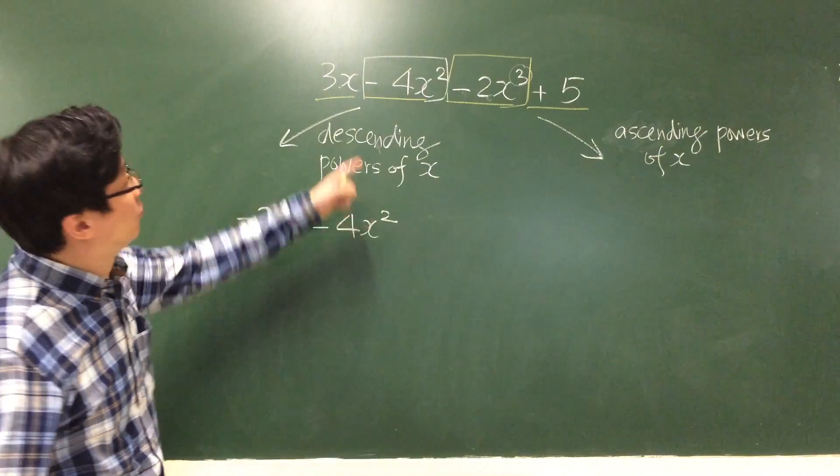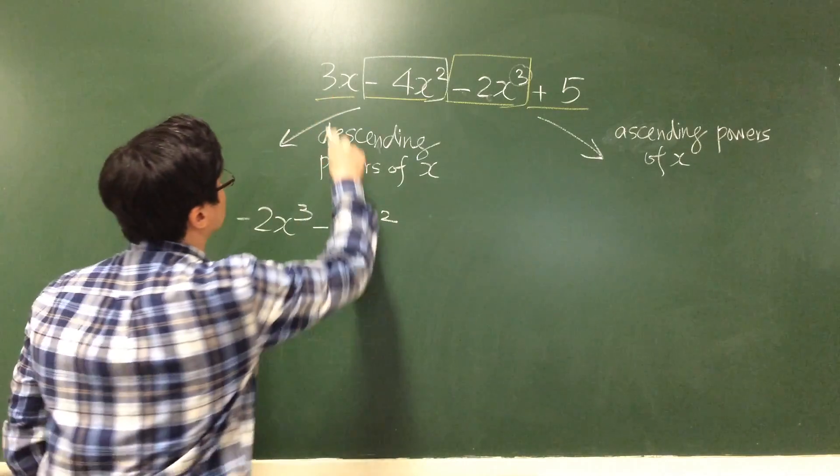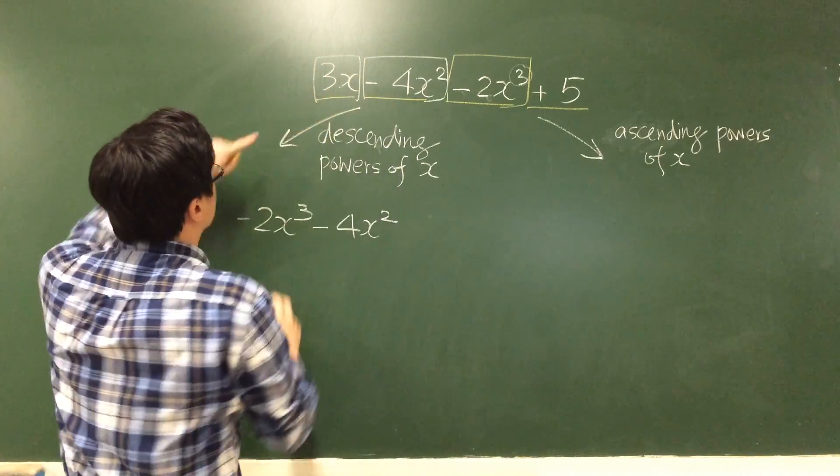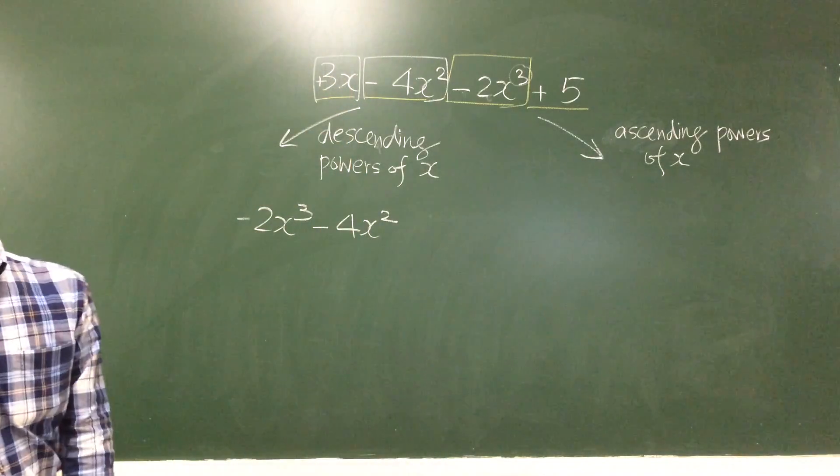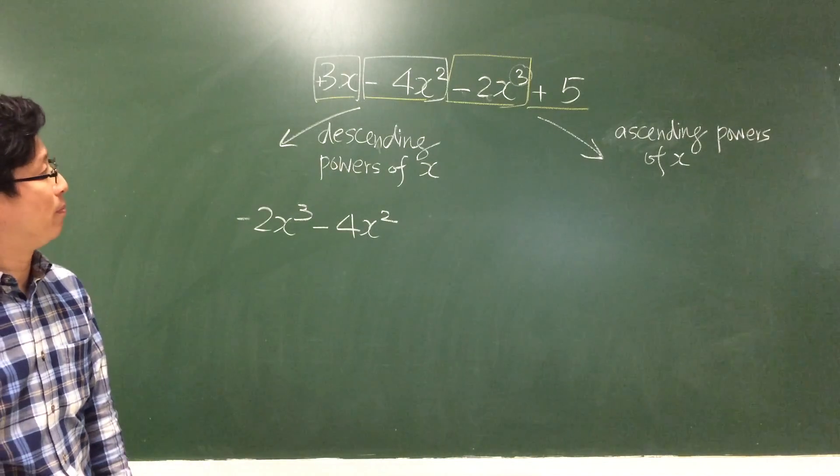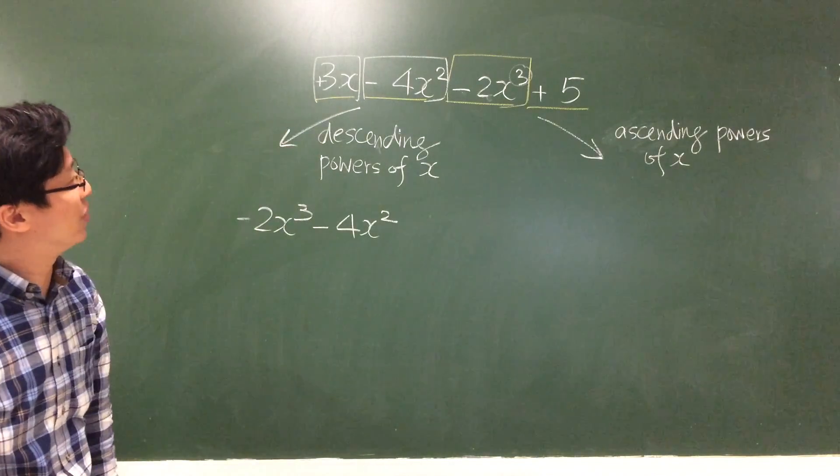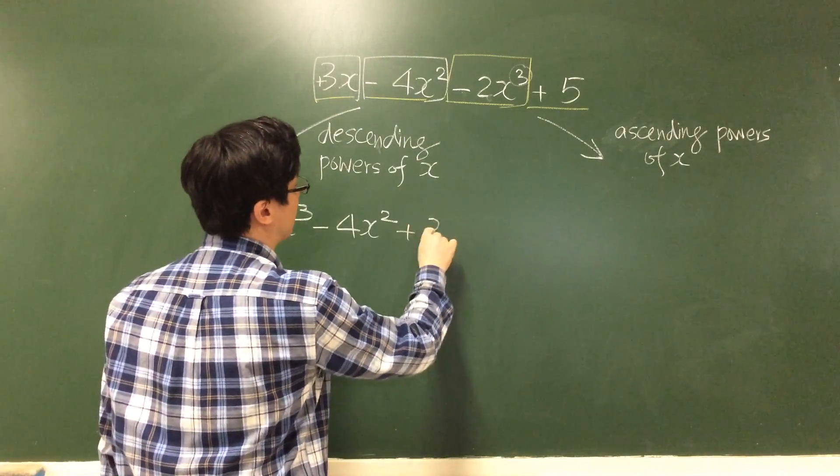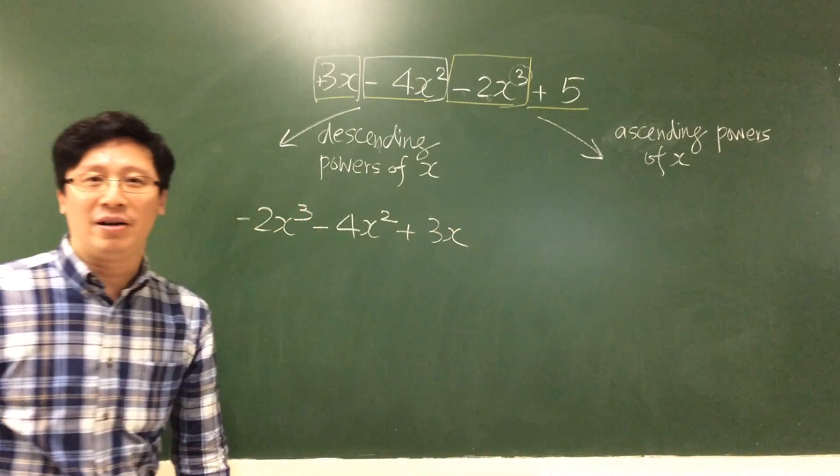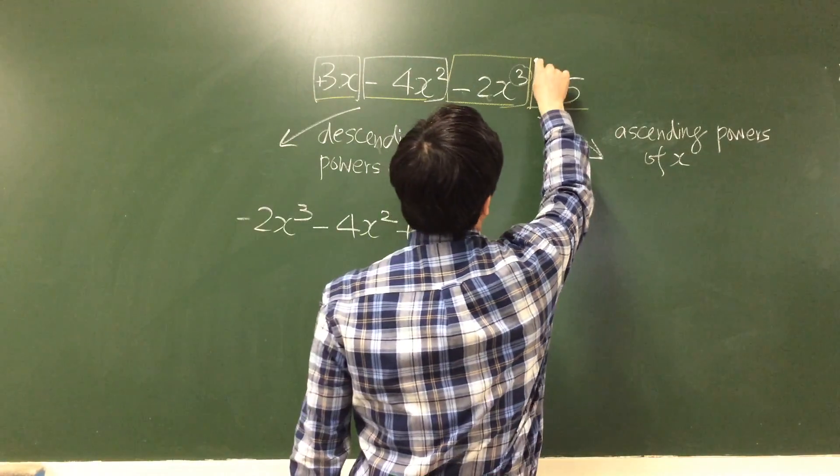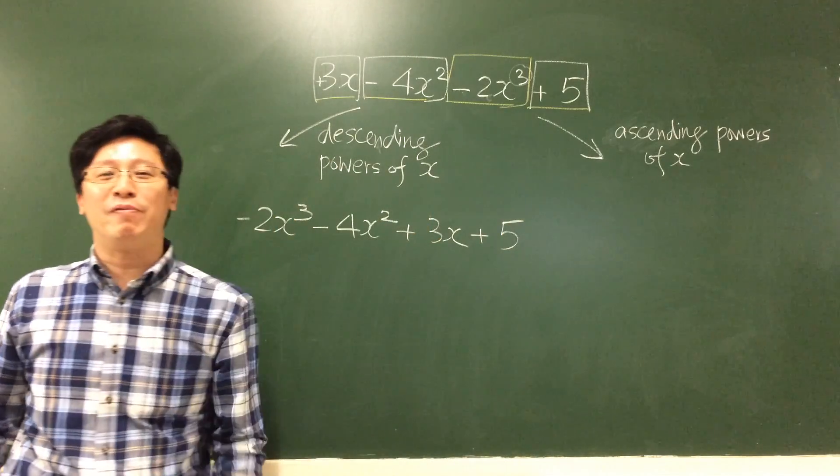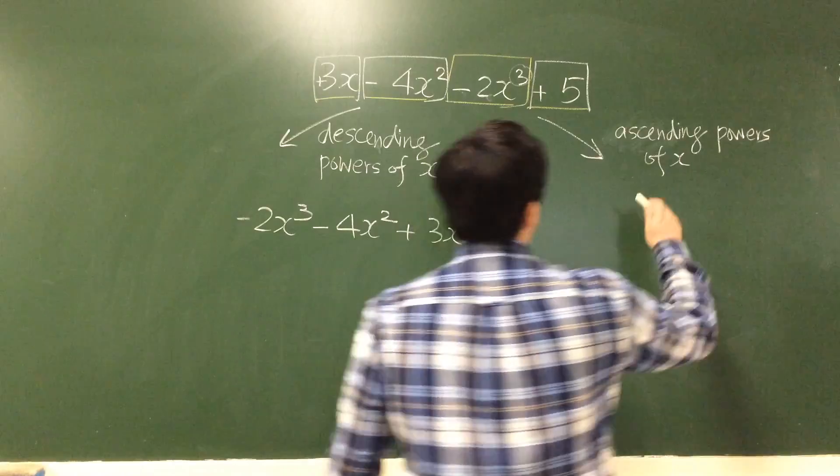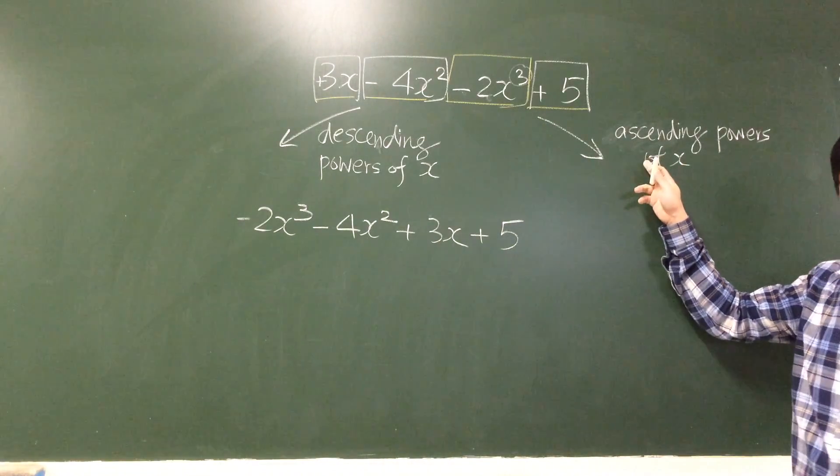The third term is 3x. Actually this is plus 3x - there is an invisible plus sign in front of 3. And finally plus 5, the constant term without the variable x. Now what if we arrange the whole expression in ascending powers of x?